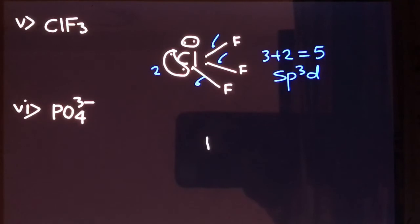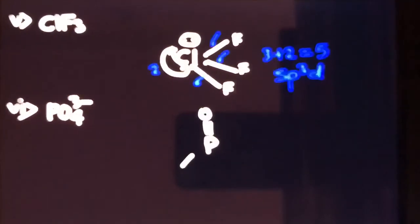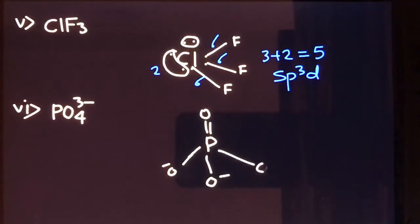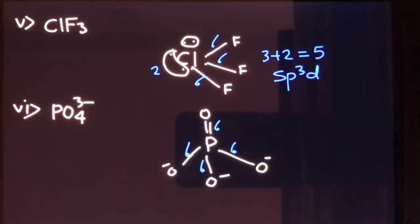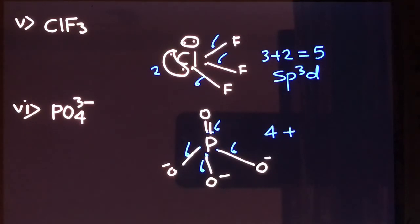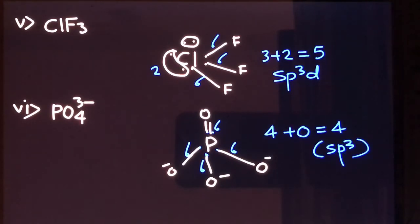Now let's find the hybridization of phosphorus in the phosphate ion PO₄³⁻. This is the anion obtained from phosphoric acid. Phosphorus makes four sigma bonds, and all five outermost electrons of phosphorus have been used in bonding, so there is no lone pair left. The number of sigma bonds is four plus zero lone pairs — steric number is four and hybridization is sp3. This is also a tetrahedral structure, and all P–O bond lengths are the same due to resonance.